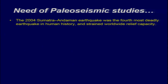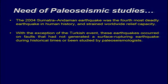The 2004 Sumatra-Andaman earthquake was the fourth most deadly earthquake in human history and strained worldwide relief capacity. After this earthquake, the Japanese people were quite alert that a similar magnitude earthquake could occur in their region, and that happened with the 2011 Tohoku earthquake. With the exception of Turkey's event, many of these earthquakes occurred on faults that had not generated surface-rupturing earthquakes during historical times or been studied paleoseismologically.